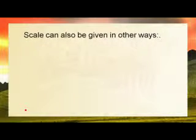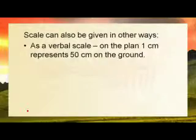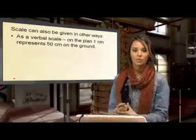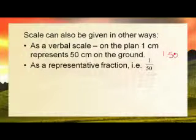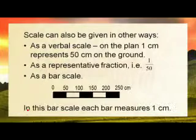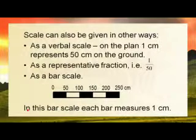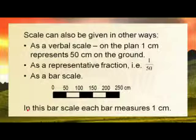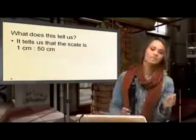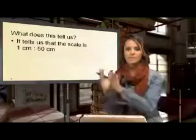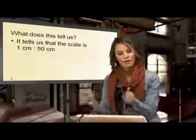Scales can also be given in other ways. You can have a verbal scale — verbal refers to words, so a verbal scale would be in words. You can have a fraction — 1 over 50 — and these all relate to that ratio of 1 to 50. Or you can have a bar scale. In this bar scale, each bar measures one centimetre. Essentially, it tells us that the scale is one centimetre to 50 centimetres — that one centimetre on the map, if you measure it with your ruler, equals 50 centimetres on the ground.